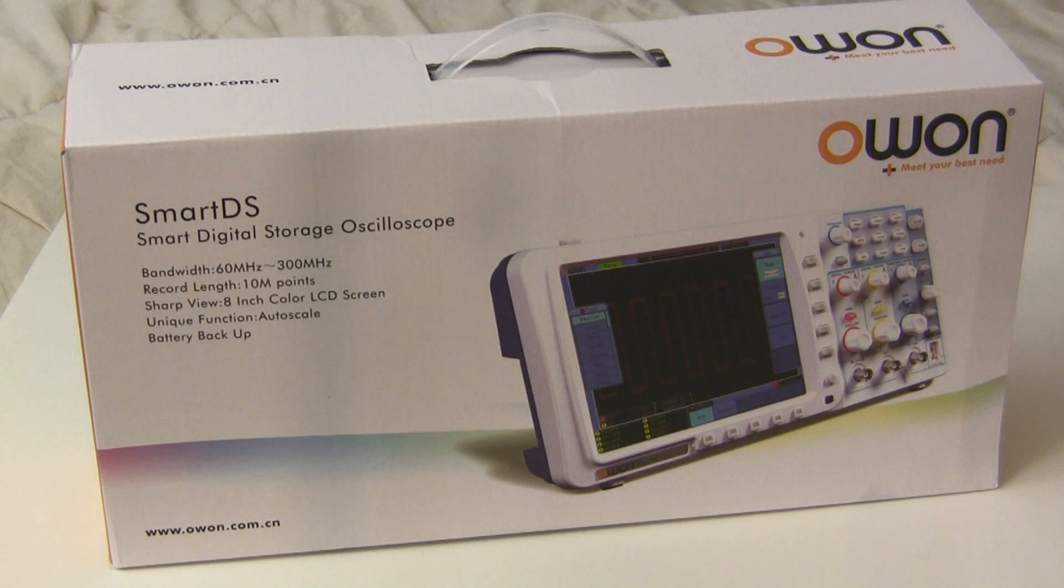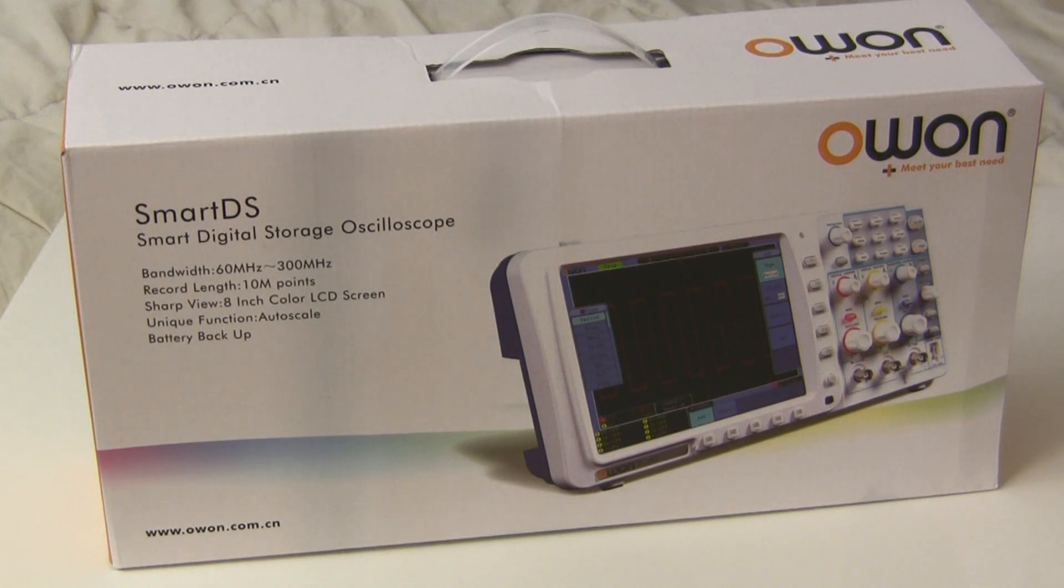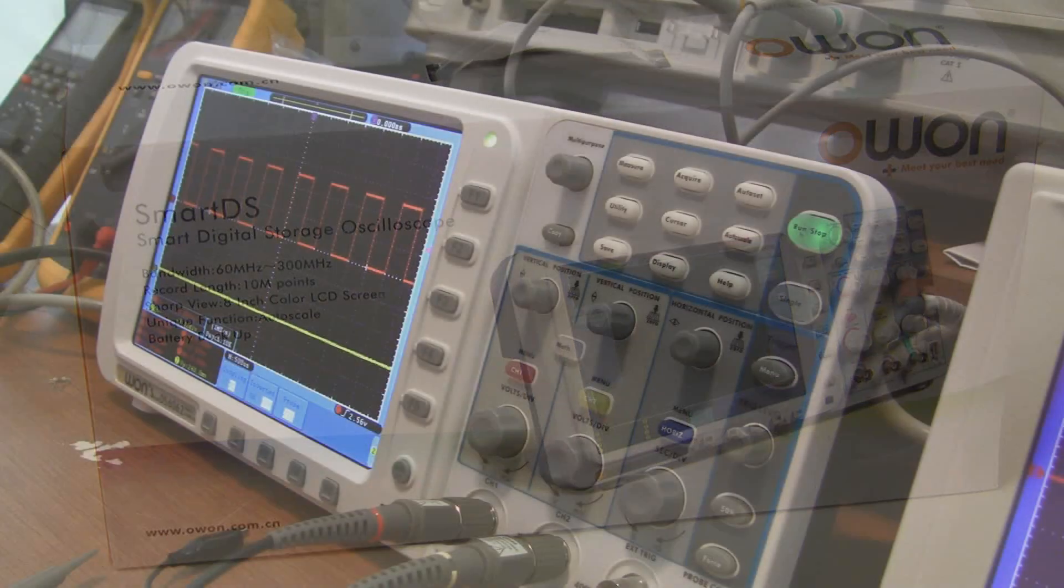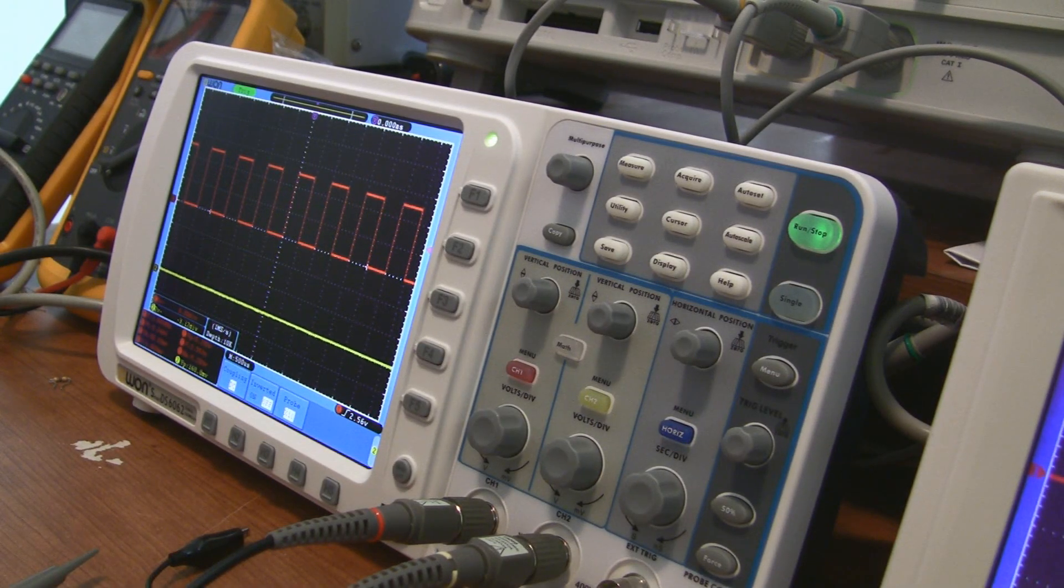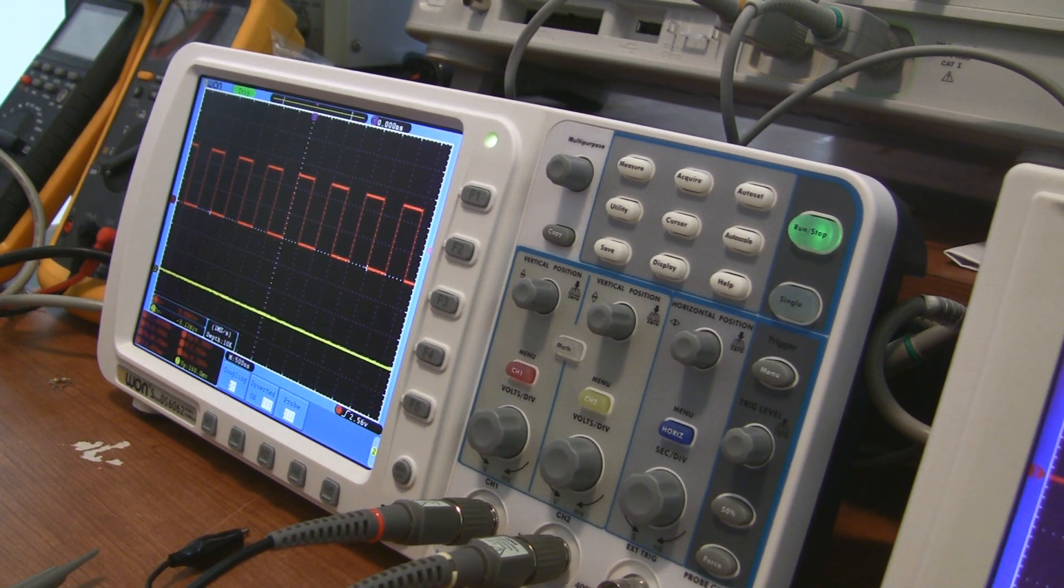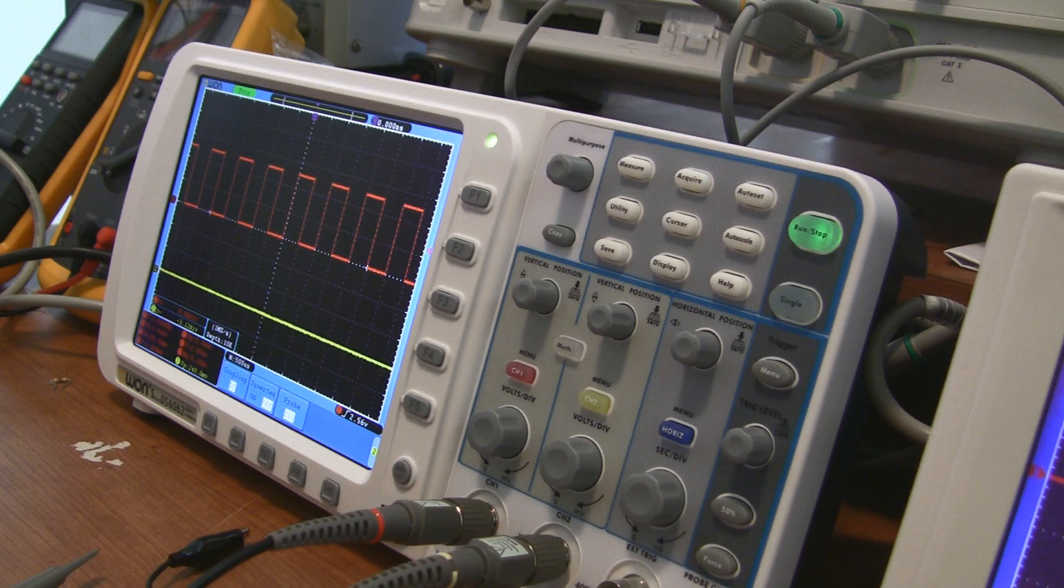So as you've probably figured out, I'm really impressed with the 6062. It's a scope that both beginners and professionals can use. The only thing that could possibly be better is if OWEN used better switches and knobs on the front panel, and if they improve their software to be more stable or include some advanced data logging, analysis, and alert features.